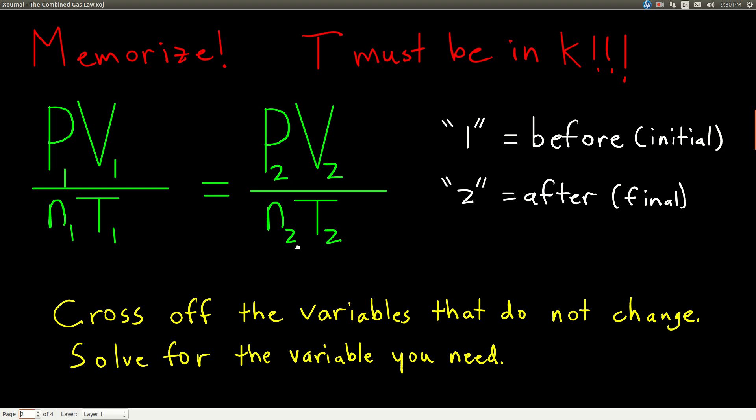With the combined gas law, what's happening is you're given some of the variables and then they change. Now, some of them usually don't change. Whatever doesn't change, all you do is you cross it off, cross off everything that doesn't change. How do you know it doesn't change? Well, a lot of times in the problem, you're told, oh, this doesn't change or that doesn't change.